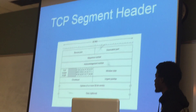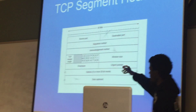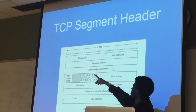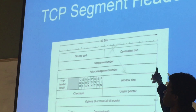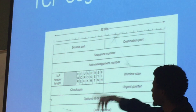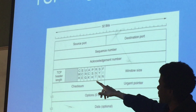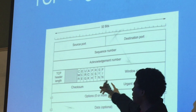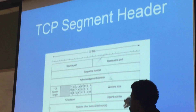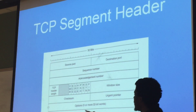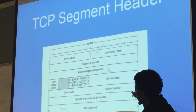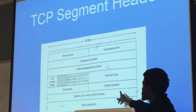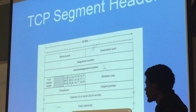The TCP segment header includes all the following fields: source port, destination port, sequence number, acknowledgement number, TCP header length, 4 bits which are unused, 8 bits of 1-bit flags each, the window size field, a checksum, urgent pointer, options, and the data that follows.